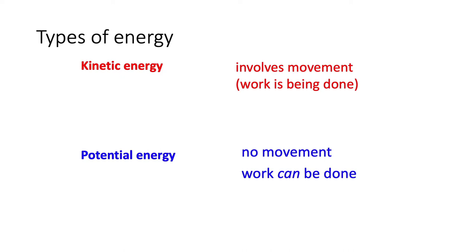The classic example of potential energy is a rock sitting on top of a cliff. That rock is not moving anywhere, but it doesn't take much to get it moving. As soon as it starts moving off the cliff, the potential energy turns into kinetic energy — the potential energy exists by virtue of its position on top of the cliff. If the same boulder were at the bottom of the cliff, it would not have potential energy — there would be nowhere for it to move.